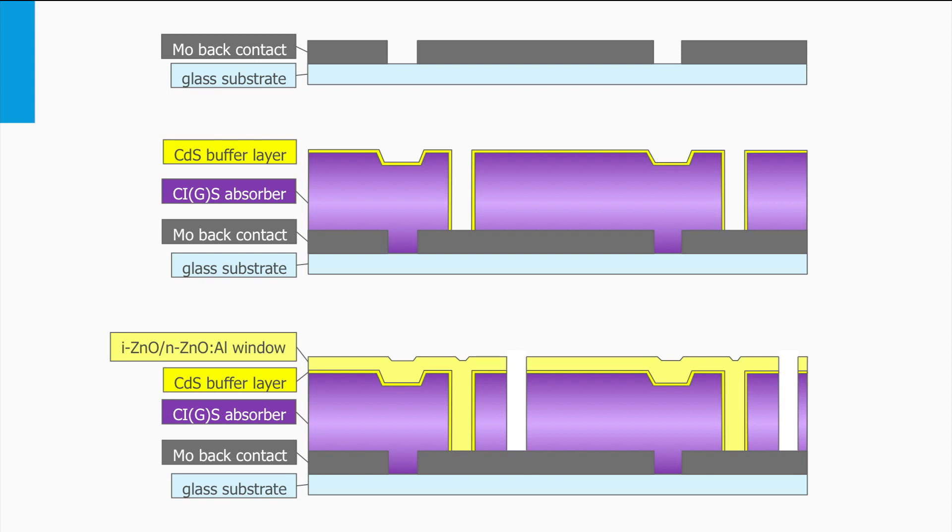Finally, the intrinsic and n-doped zinc oxide is deposited followed by a final laser scribe step. Now the front TCO electrode is connected with the molybdenum back contact of the next solar cell.